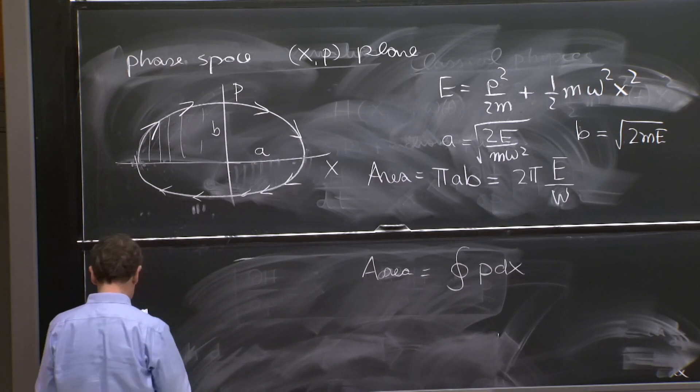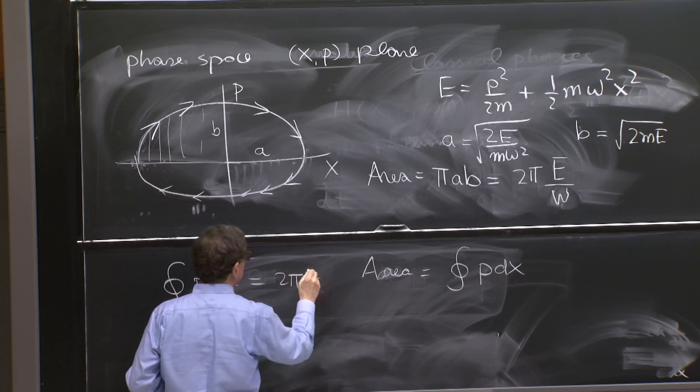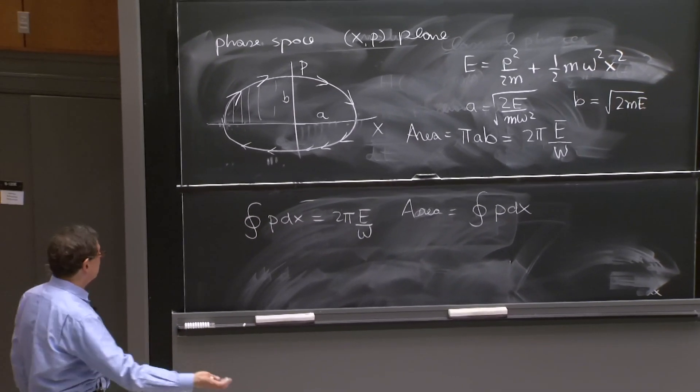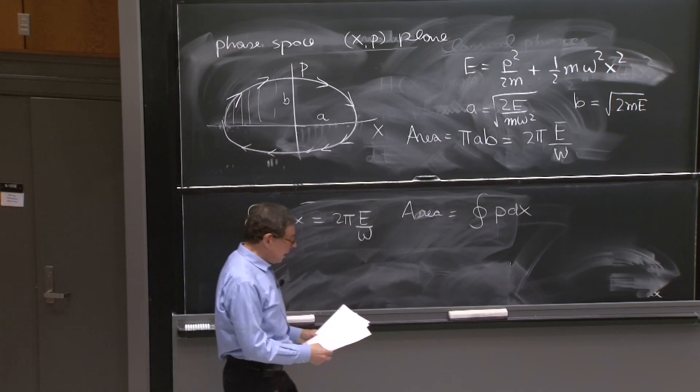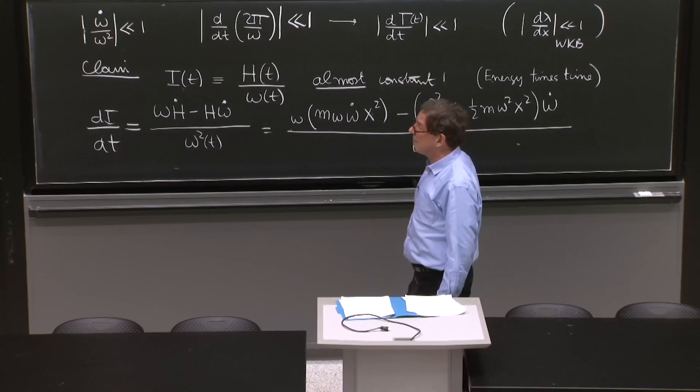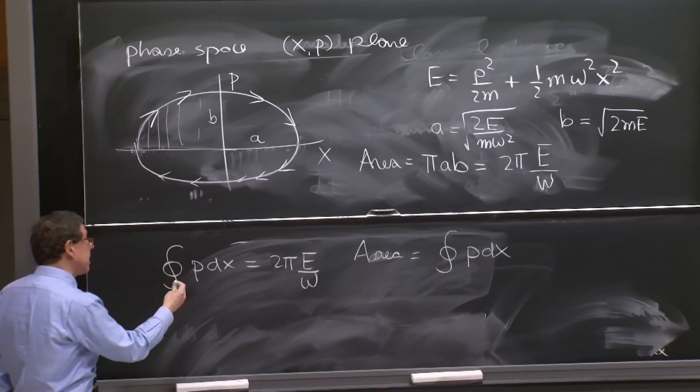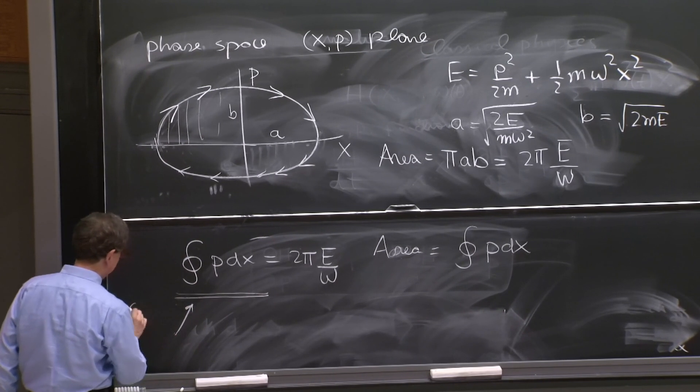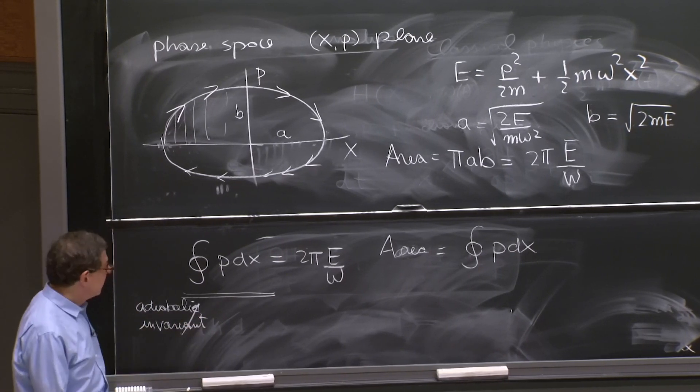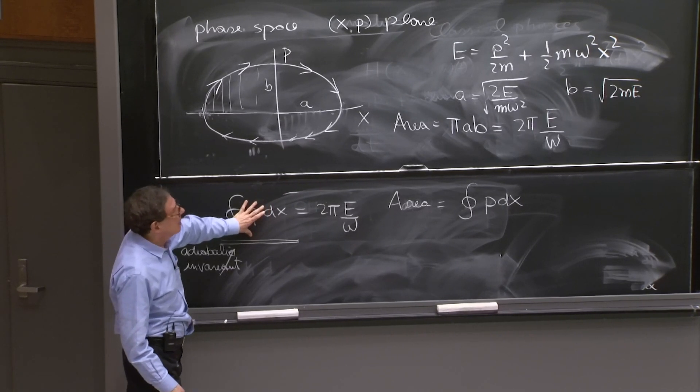So we get the idea that the integral of p dx is roughly equal to 2 pi E over omega. That's exactly equal when the system is time independent. But then, if it's not time independent, this is an equation that can help us think of this system and identify an adiabatic invariant. Because we identify this quantity as an adiabatic invariant. The more general statement in classical mechanics is that this kind of integral is an adiabatic invariant. So in classical mechanics, people search for adiabatic invariants by integrals over phase space. It's a nice way to think of that.